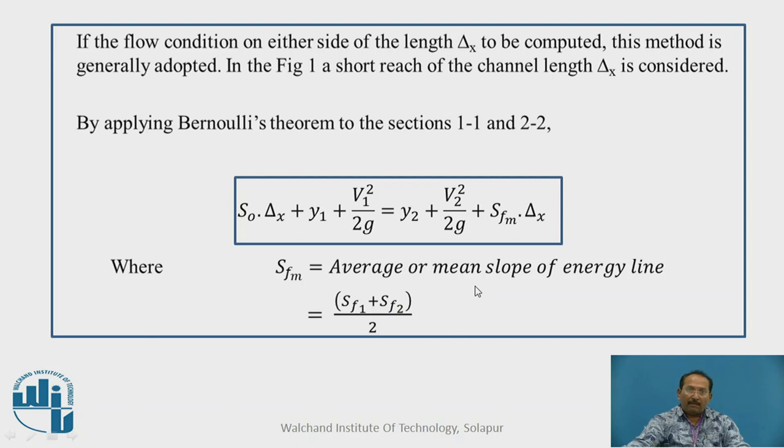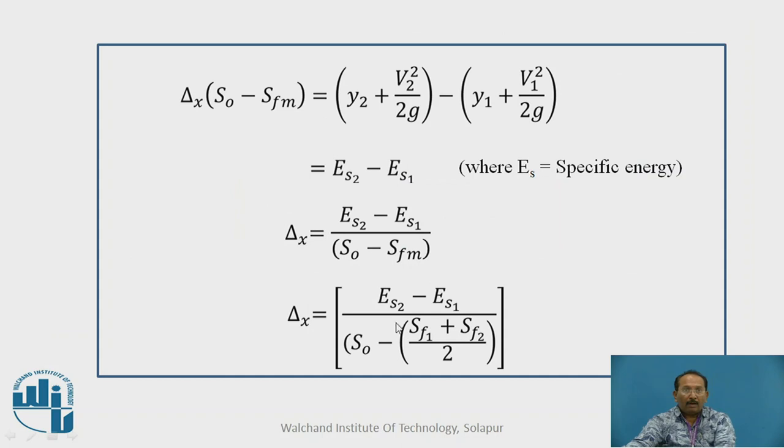So, Sfm, it is average mean slope of the energy line, which is equal to Sf1 plus Sf2 upon 2. y2 plus V2 square upon 2G and y1 plus V1 square upon 2G are nothing but the specific energies. We are directly taking this y value, this depth of water plus kinetic head. So delta x is, we are getting, S2 minus S1, specific energy at section 2 minus specific energy at section 1 upon S0 minus Sfm.